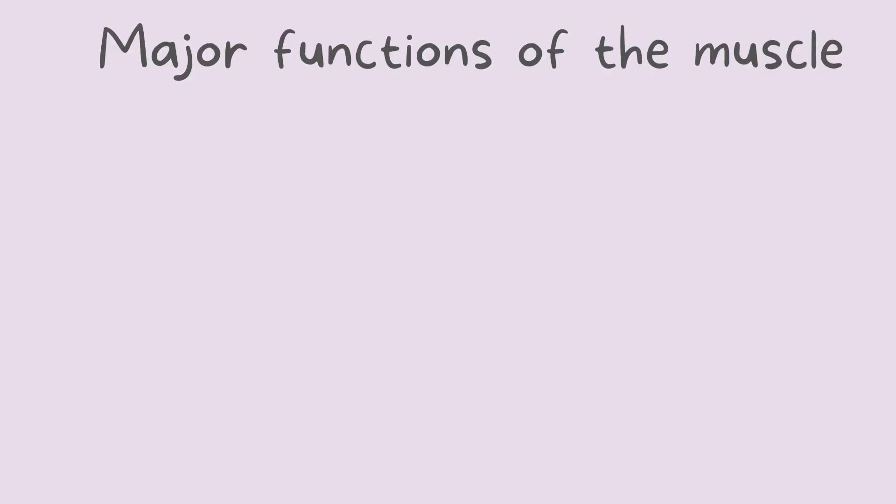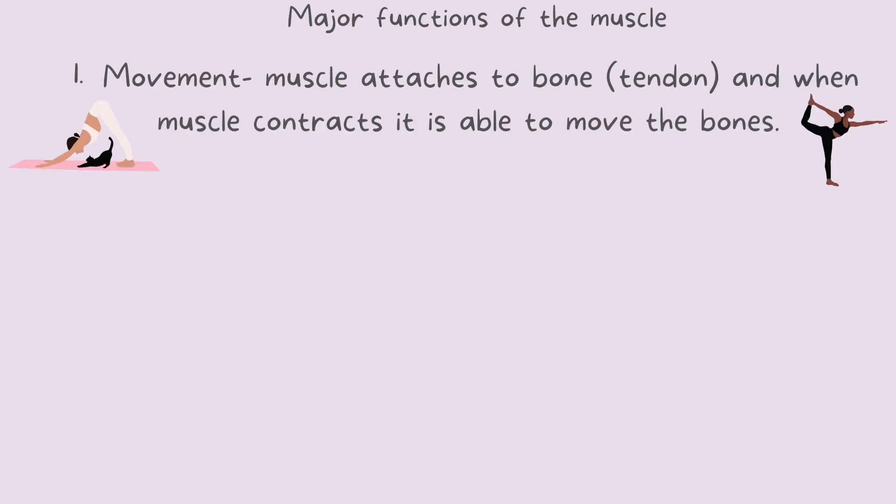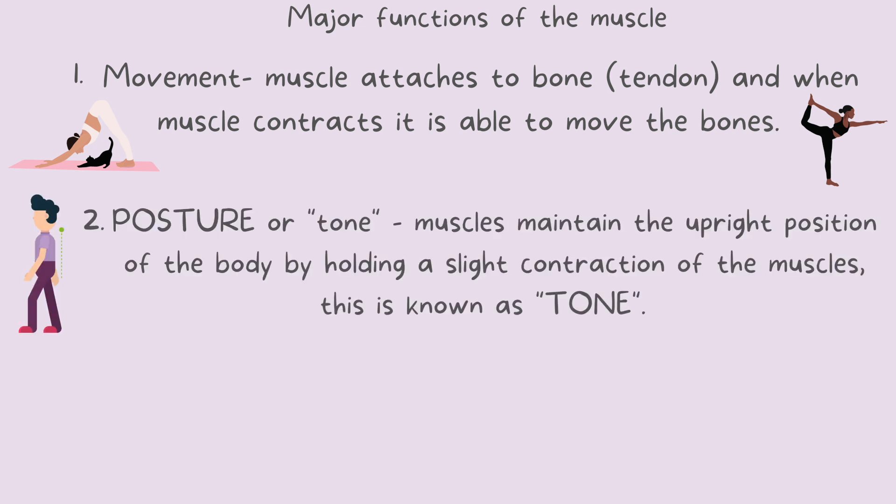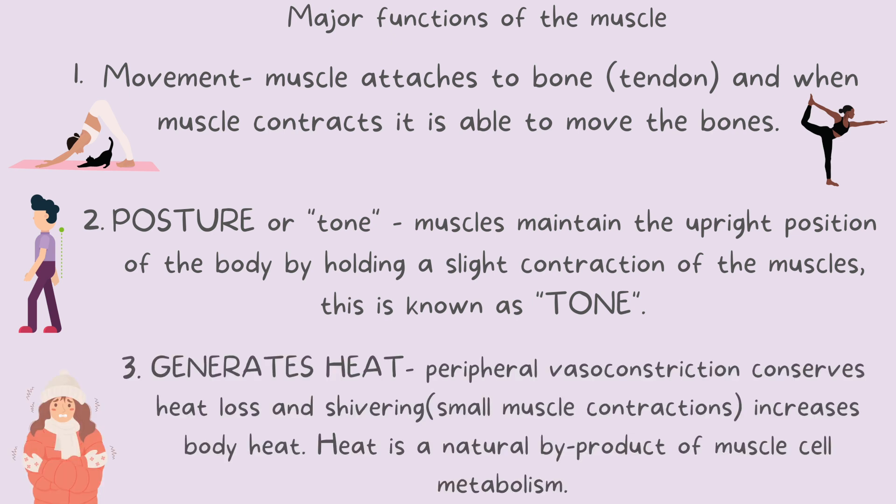Lastly, let's sum up three major functions of the muscular system. First, movement: muscles attach to bone and when they contract, they move our skeletal system. Second, posture: muscles maintain the upright position of our body by holding a slight contraction — in our abdomen, neck, and back — also known as tone. Third, muscles generate heat. This happens in two ways: peripheral vasoconstriction, which conserves heat loss, and shivering, which increases body heat. Heat is created because it is a natural byproduct of muscle cell metabolism.